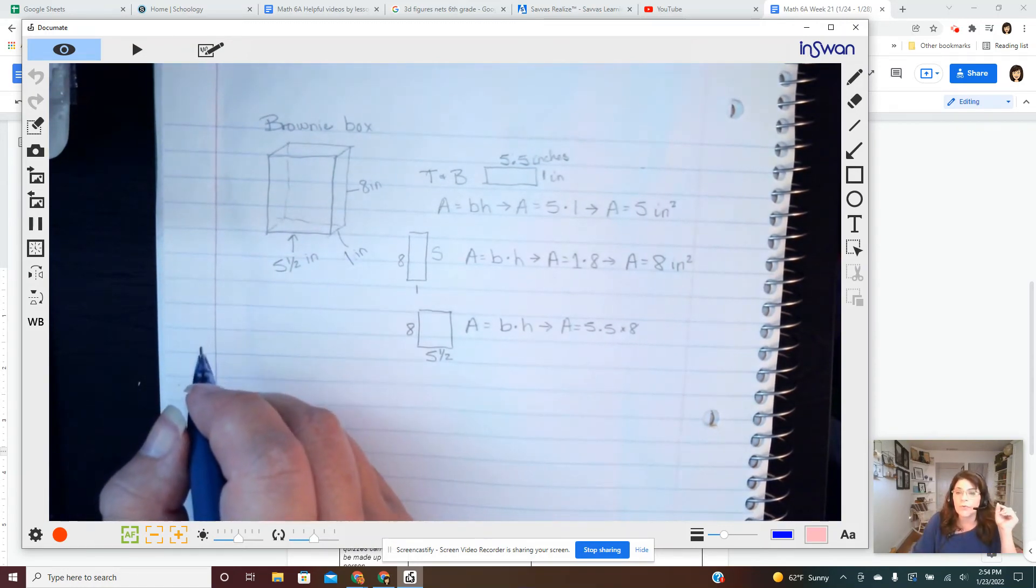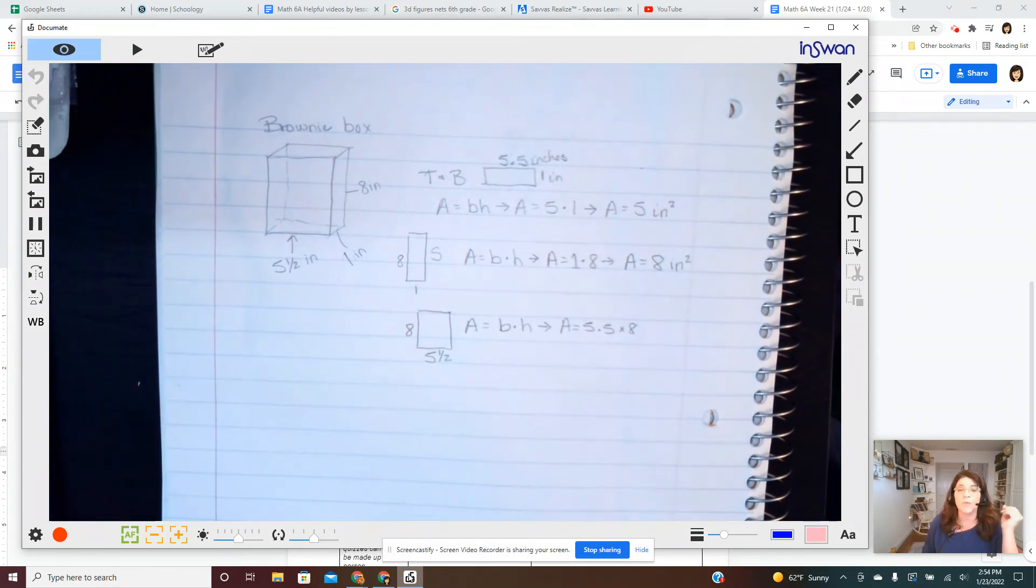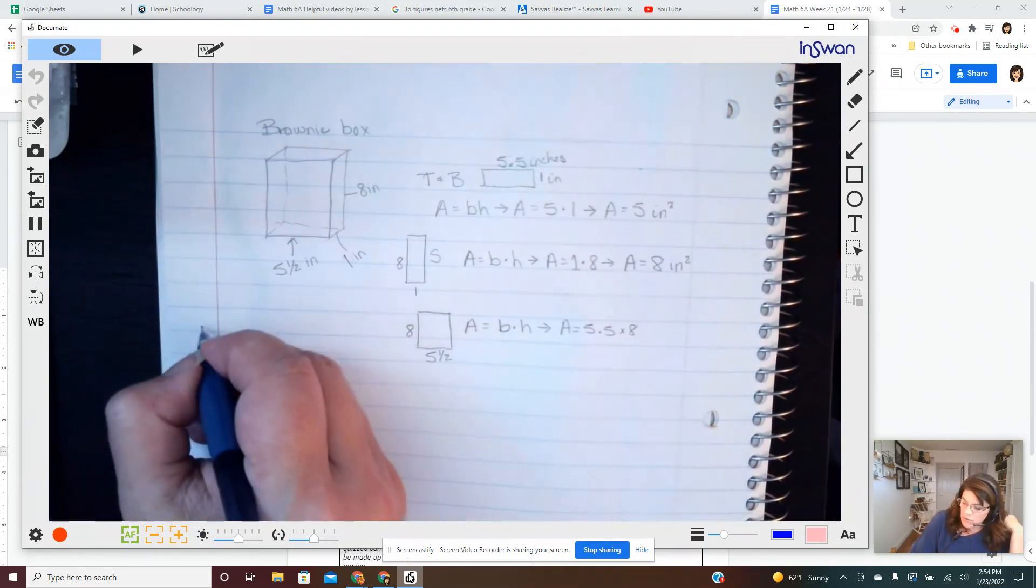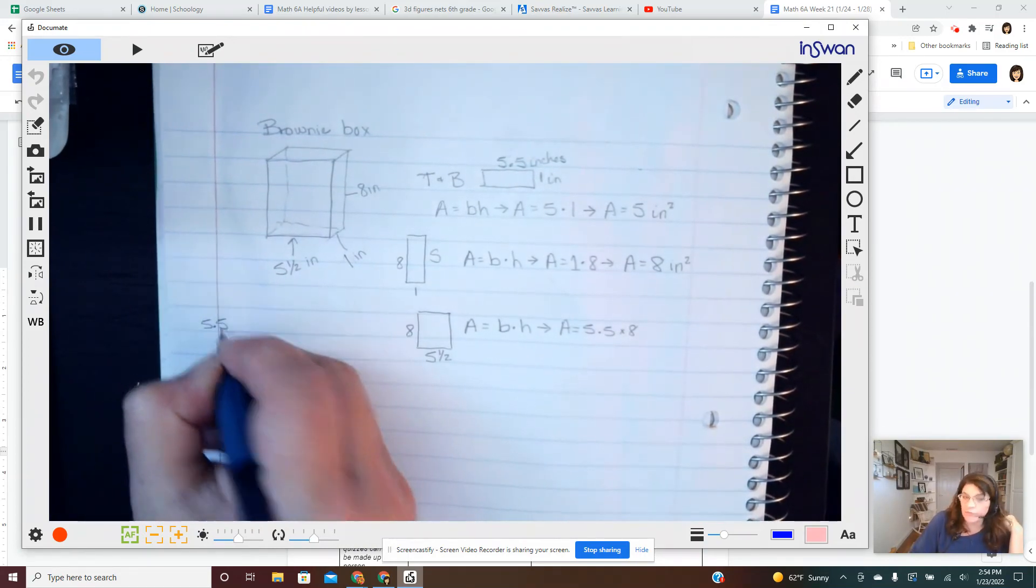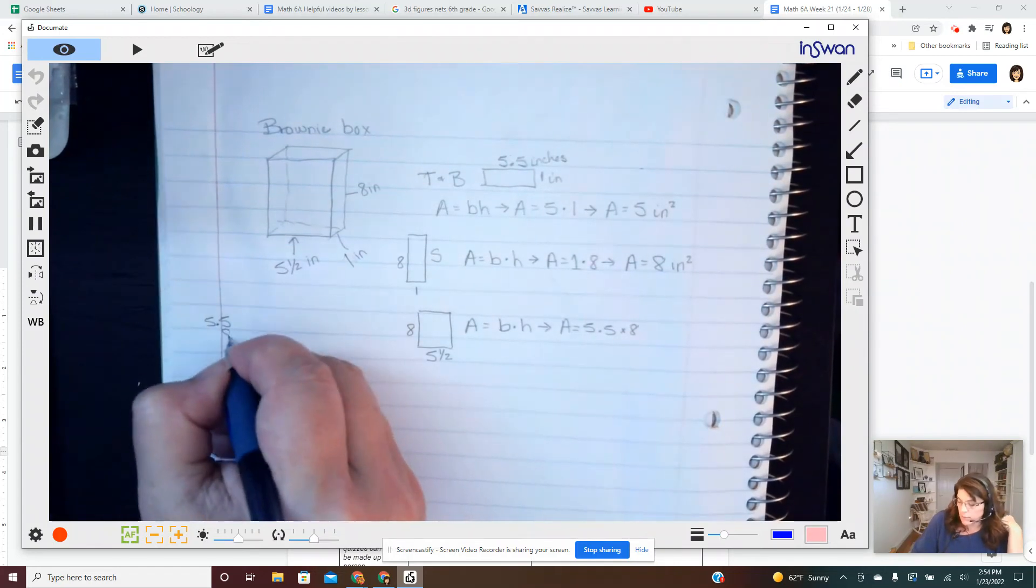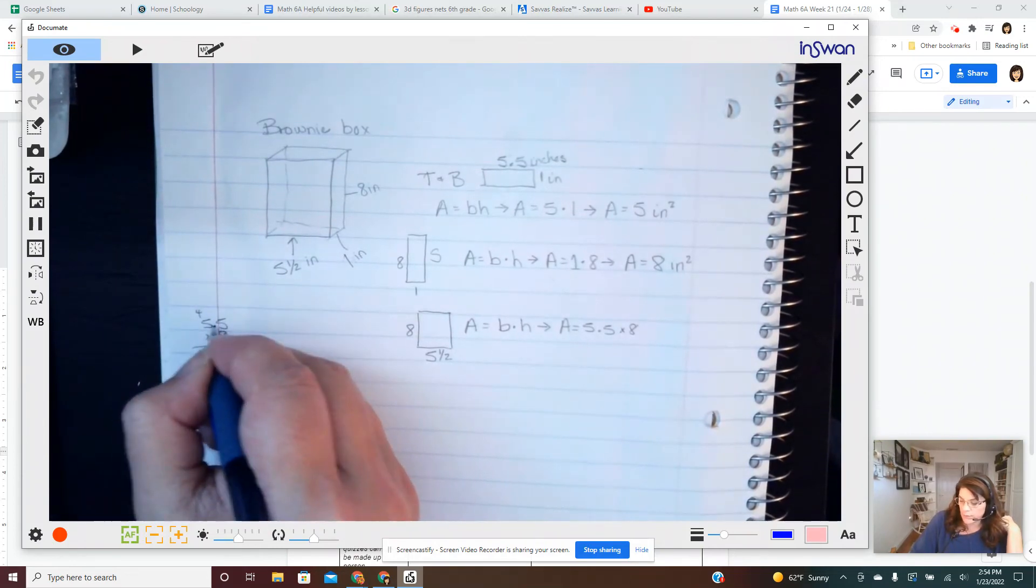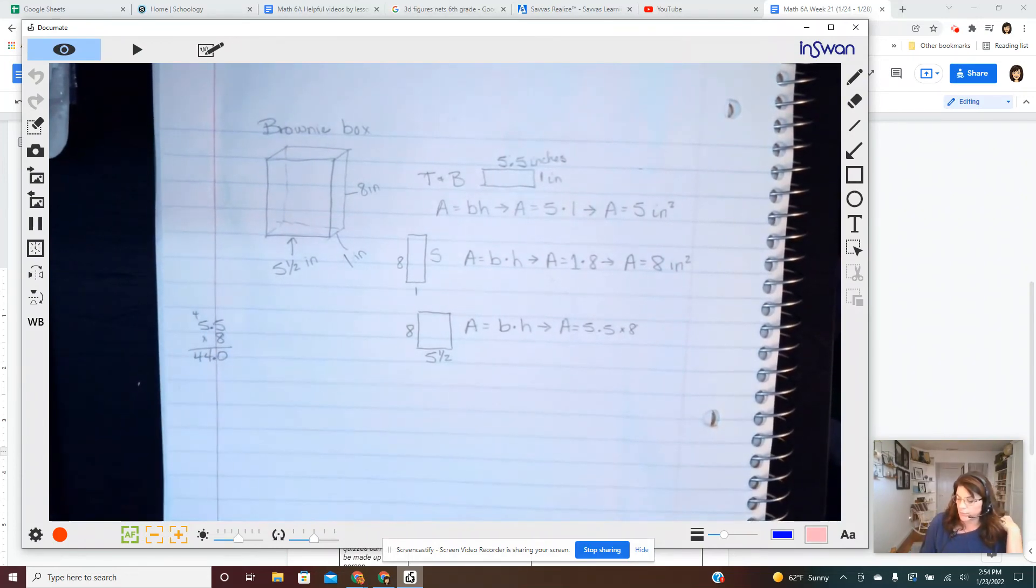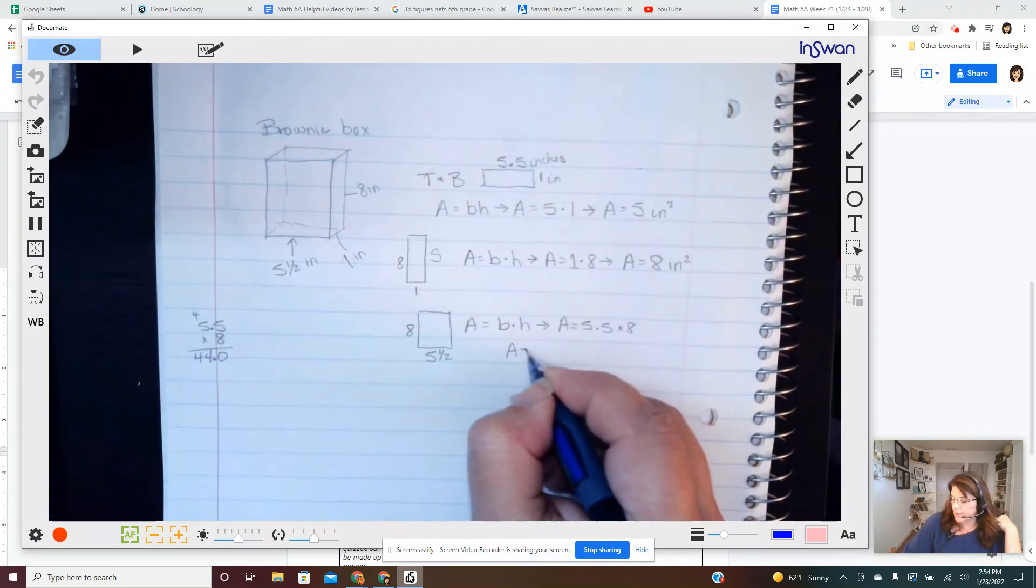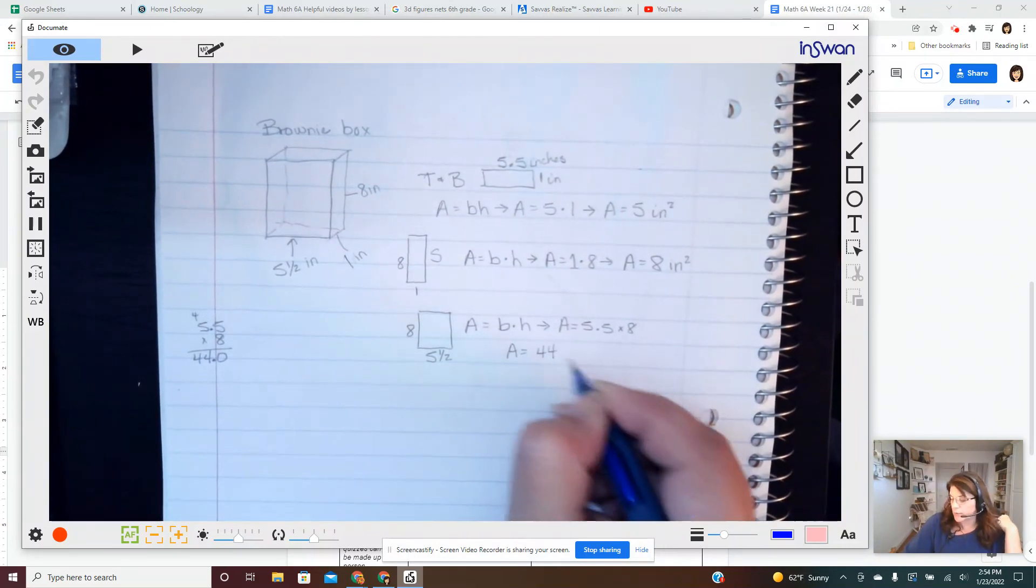But I don't want you to do them all in your head. That's where we make silly little mistakes. Even if you can, double check yourself. So if I take 5.5 over here on the side, multiply by eight, that's 44. Area equals 44 square inches.